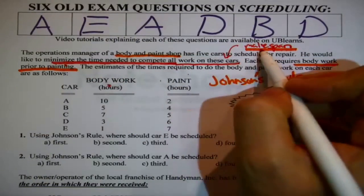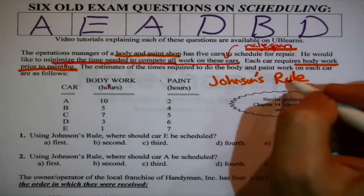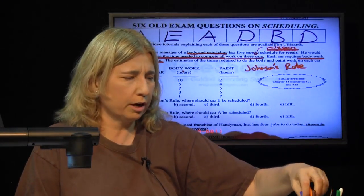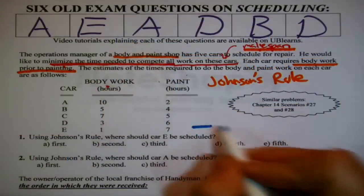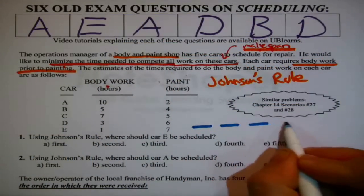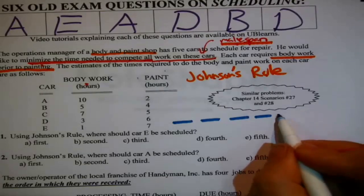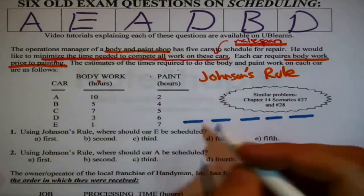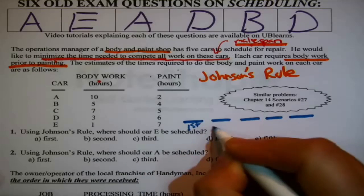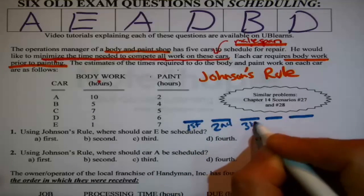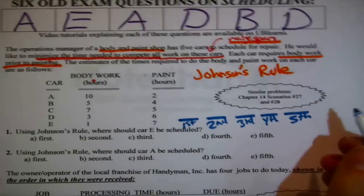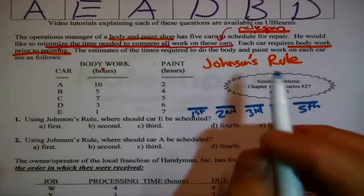Because he said he wanted to minimize the make-span, that means you need to use Johnson's Rule. The questions are about how these should be scheduled. Johnson's Rule, the easiest way to use it is to make five blanks because there are five cars requiring scheduling: first, second, third, fourth and fifth.